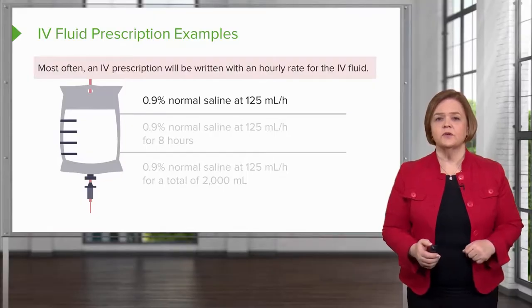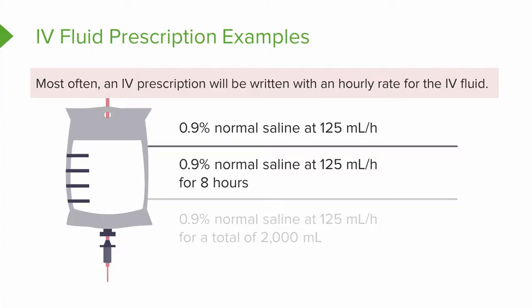Let's look at a different order. What's different about this one is it tells us just for eight hours. If you multiply 125 times eight, that comes up to 1000 milliliters. This indicates the healthcare provider wants this patient to just get 125 milliliters per hour for eight hours — roughly a thousand milliliters of fluid in. After the eighth hour, the IV should be discontinued if the healthcare provider has not ordered additional fluids.